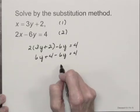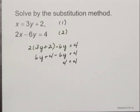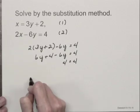6y minus 6y is 0, so I have 4 equals 4. This statement is true for all values of x and y, which tells us that the system of equations has infinitely many solutions.